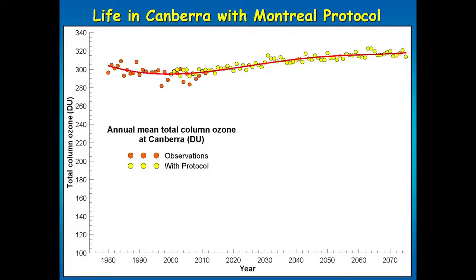Here's life in Canberra with the Montreal Protocol. Ozone in Dobson units is on the vertical axis. The orange dots are observations — annual average values — combining various satellite-based and ground-based instruments from 1979 through to last year. The yellow dots are the projection with the chemistry climate model going through to 2075. With the turnaround of the equivalent effective stratospheric chlorine, we see a recovery of the ozone layer, and by 2075 you actually end up with more ozone than you would have had in the 1970s and 1980s.